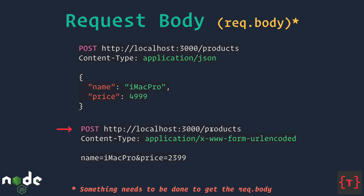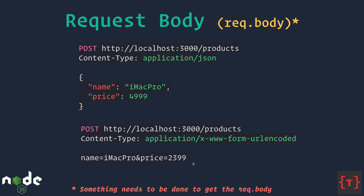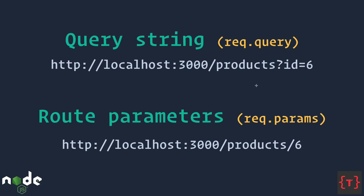If you make a POST request to the same URL with a Content-Type of application/x-www-form-urlencoded, the request body looks like a query string — for example, name=imac-pro&price=2399. This can also be accessed using the same request.body object. Now let's see how to handle query strings, route parameters, and the request body inside our Express application.